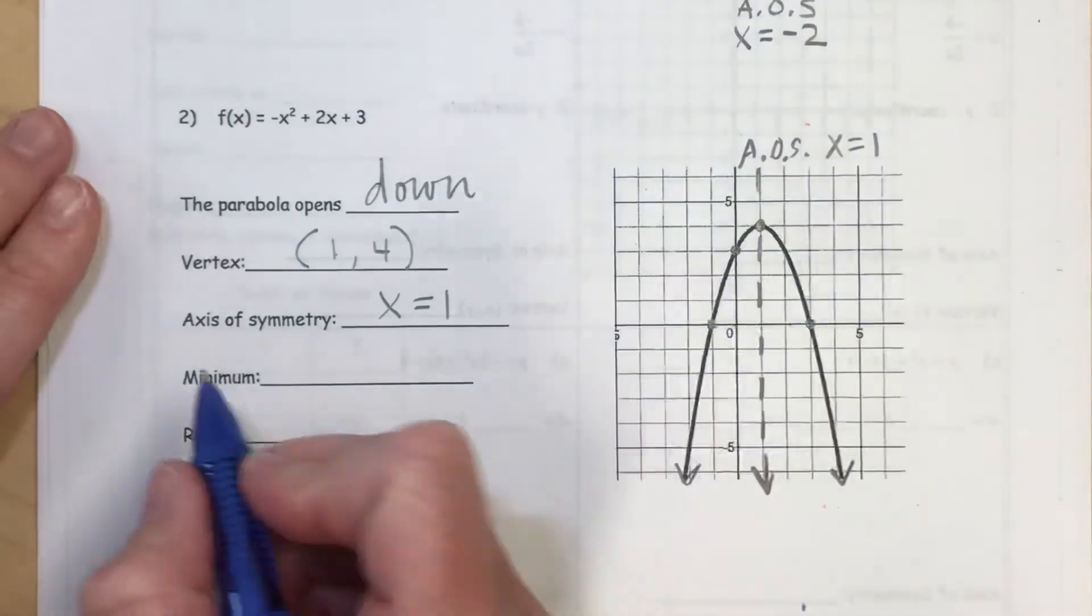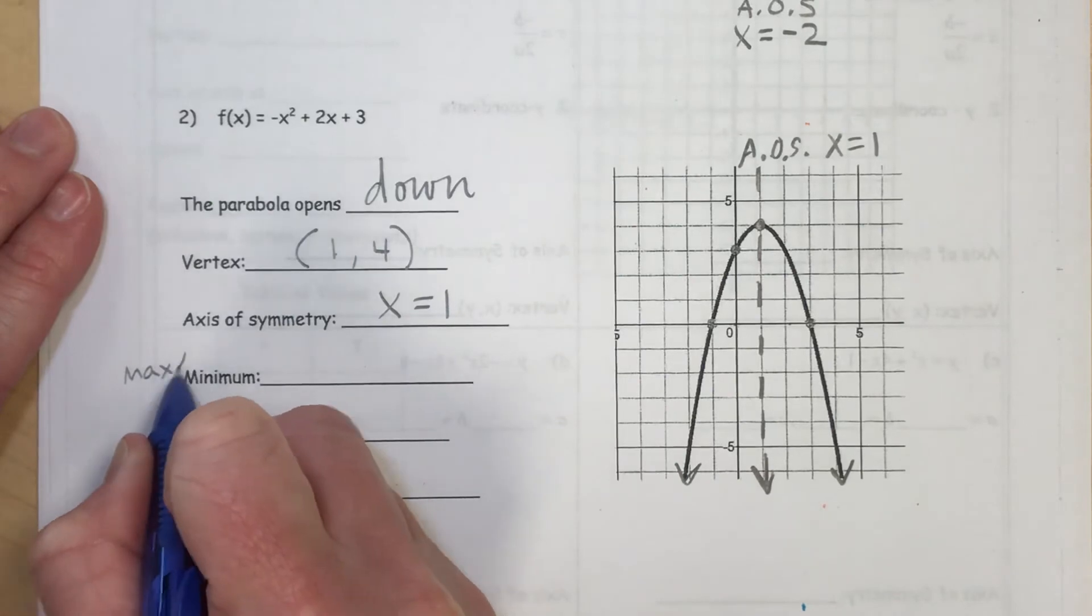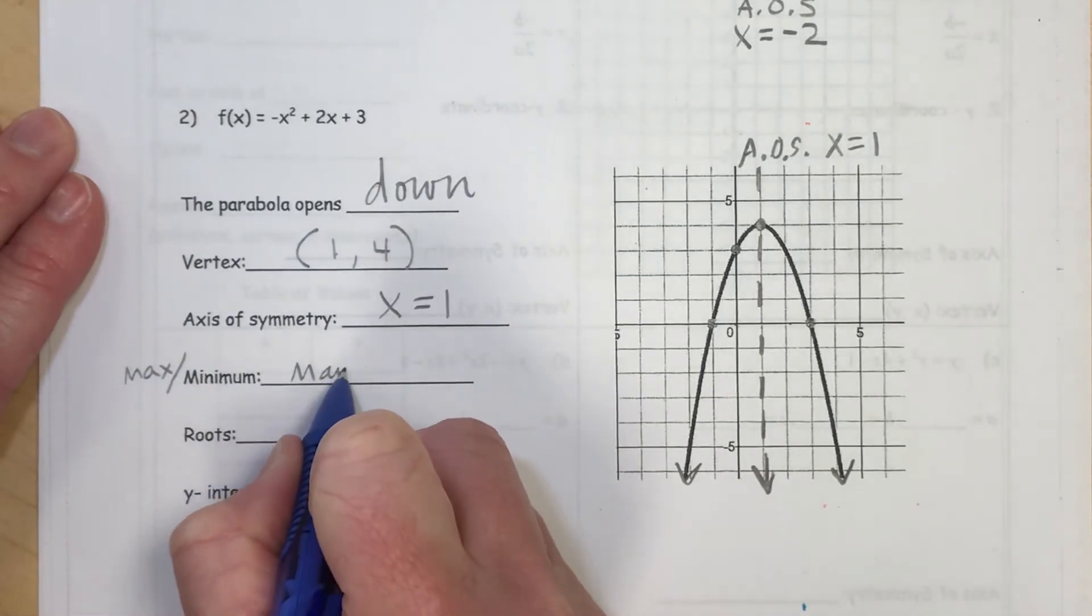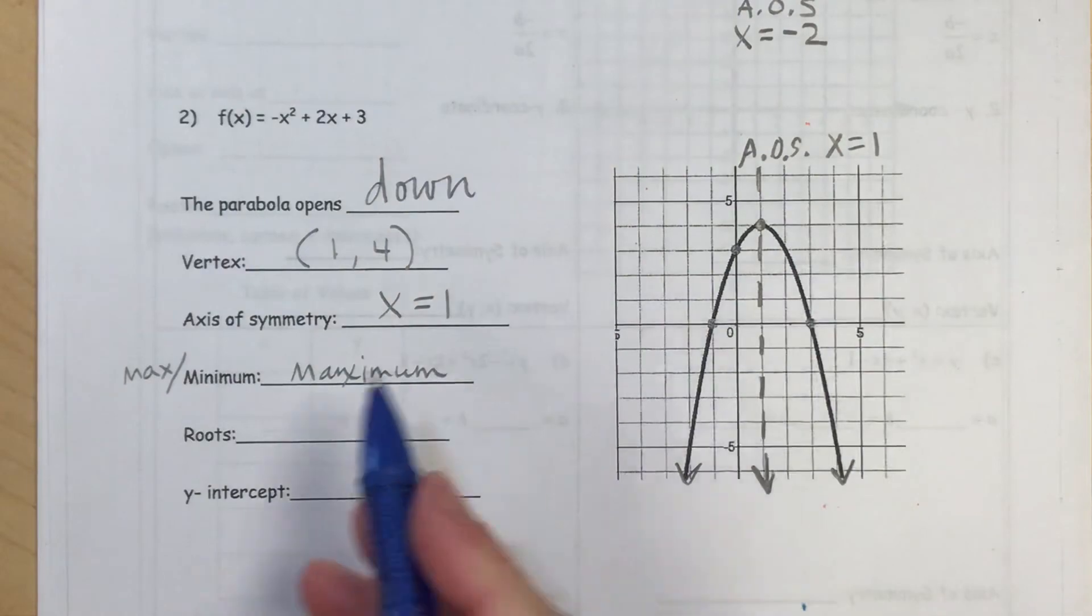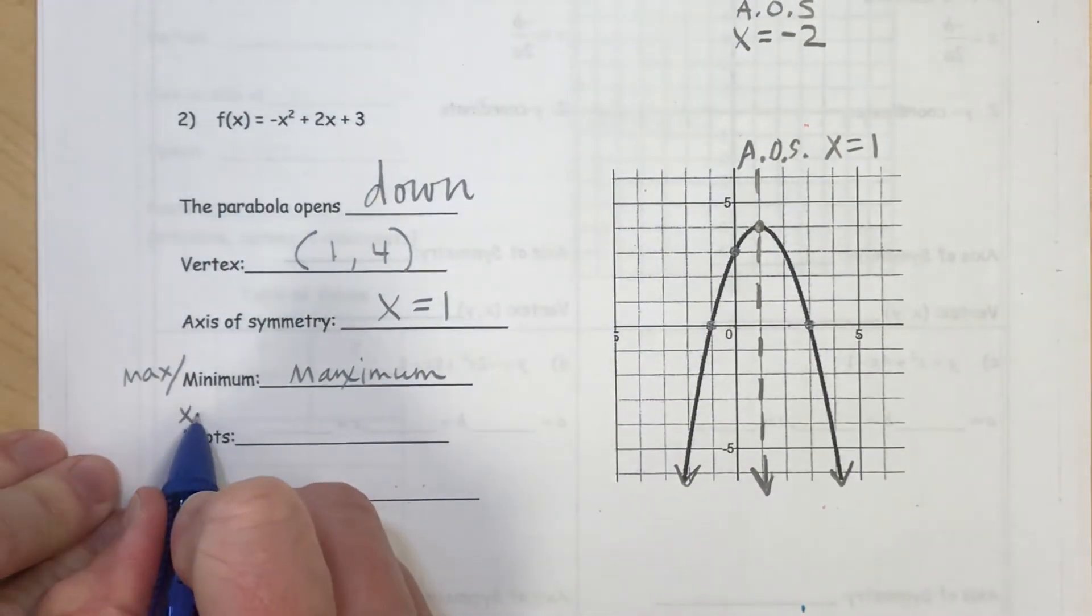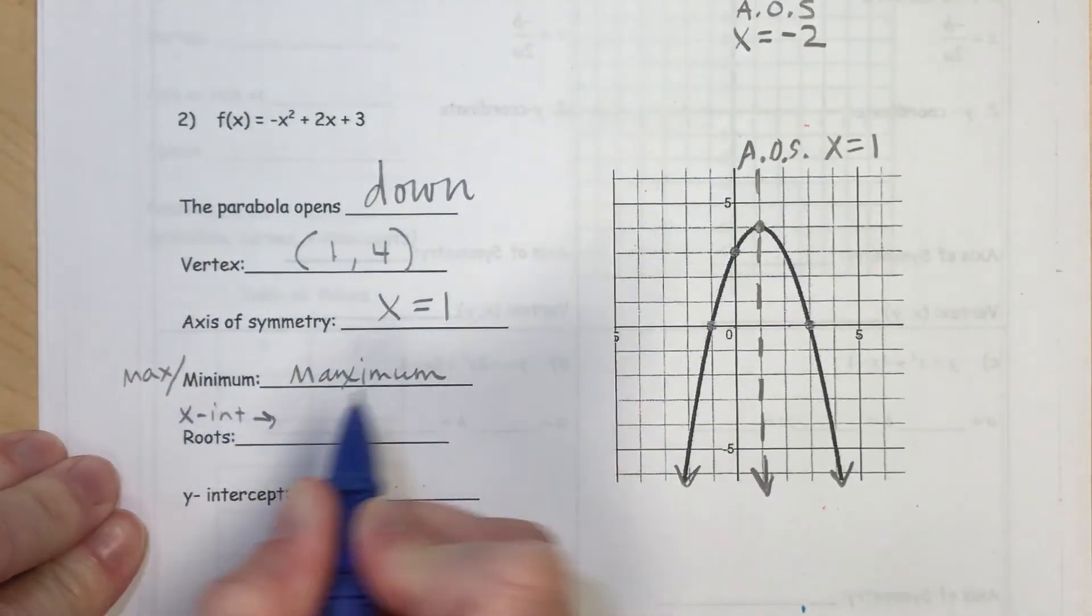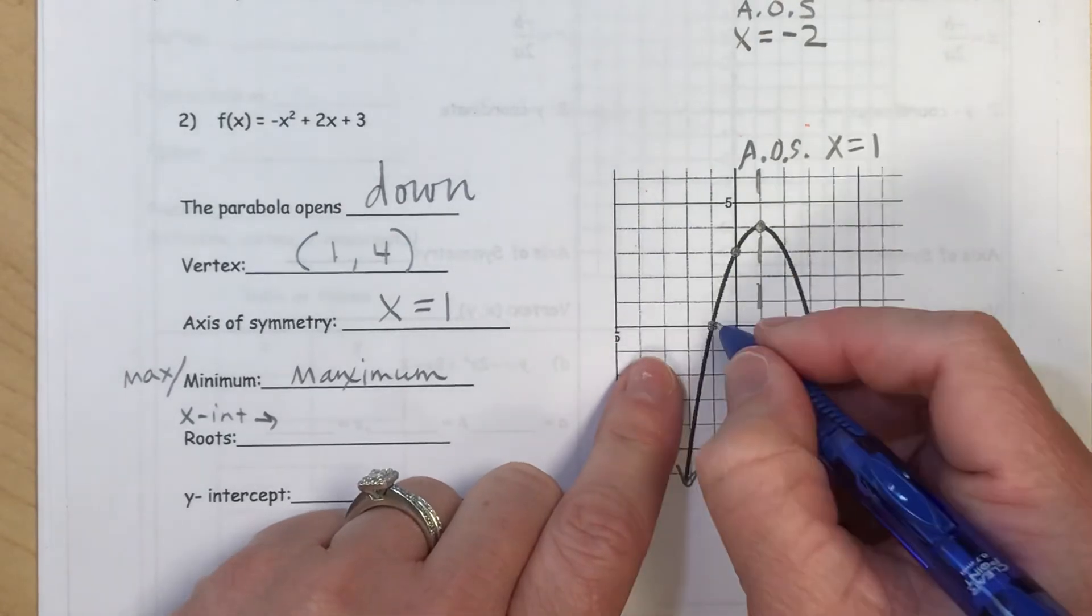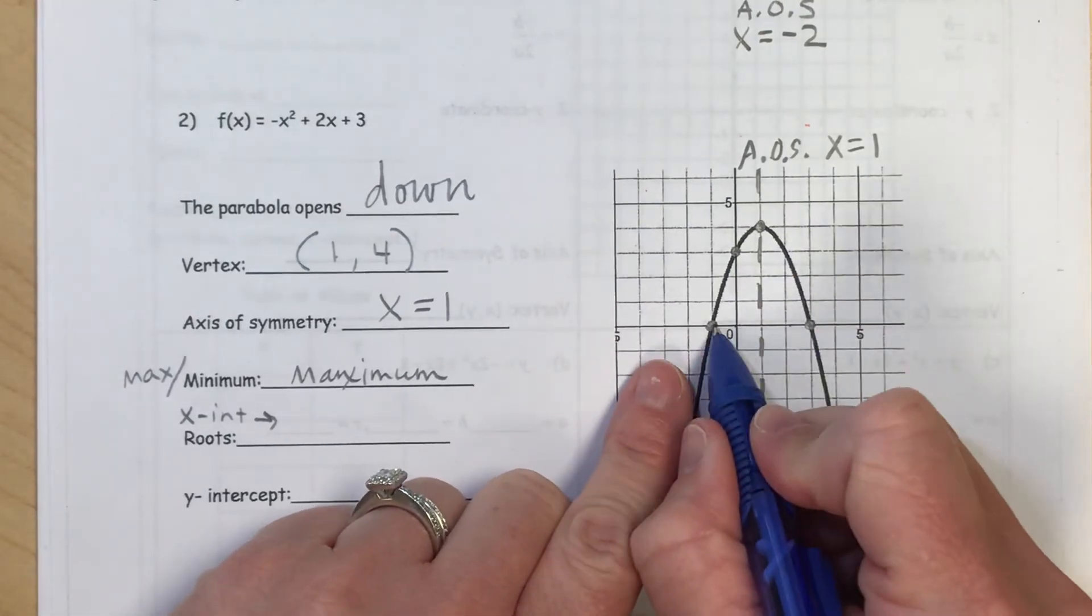Now, for this picture, again, I meant to say max or min should be a maximum. And our roots are also known as x-intercepts. And so for our picture here, they are actually already labeled here, but I want to identify what those points are.